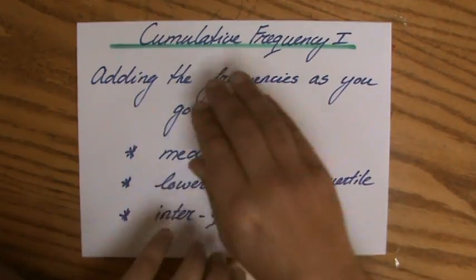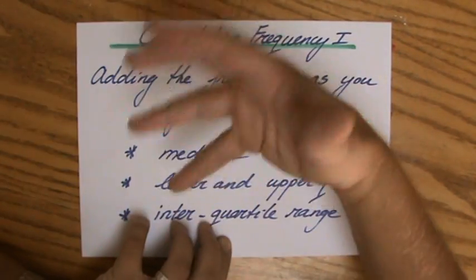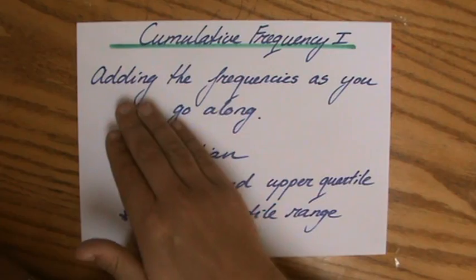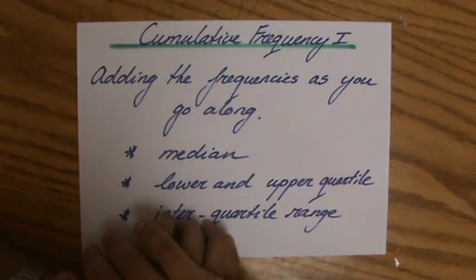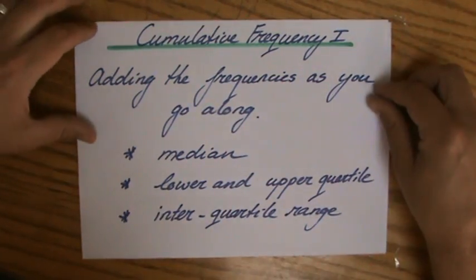Cumulative means adding or on top of them - it is adding the frequencies as you go along. That will make more sense in a minute when I show you an example question.